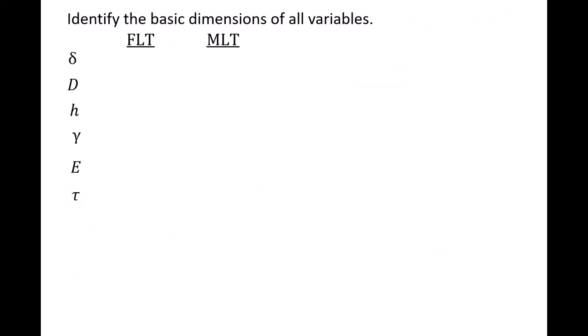We list the basic dimensions of all six variables in the FLT and MLT dimensional systems. The maximum deflection delta, tank diameter D, liquid height h, and thickness tau have dimensions of length in both systems.